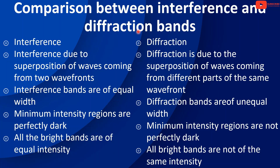Now a comparison between interference and diffraction bands. Interference is due to the superposition of waves coming from two wavefronts, as in Young's double slit experiment. In interference, the bands are of equal width and the minimum intensity regions are perfectly dark. All bright bands are of equal intensity.